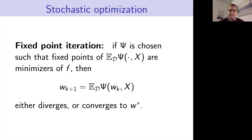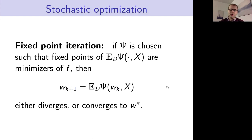Most stochastic optimizers are based on some form of fixed-point iteration, because we can formulate minimization in terms of solving a root-finding problem to locate critical points. We imagine a map psi such that the fixed points of the expectation of psi are minimizers of f. Then we know this sequence of iterations will either diverge or converge to some minimizer w*.